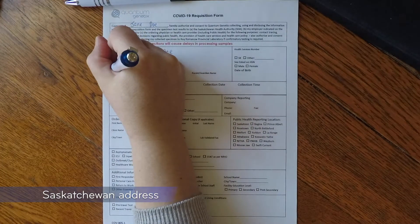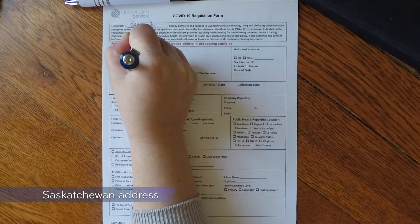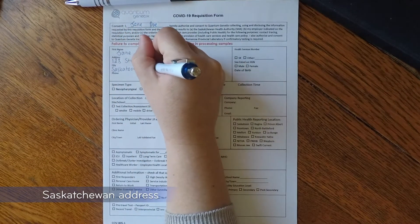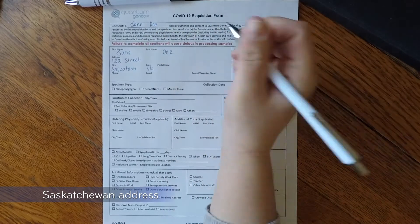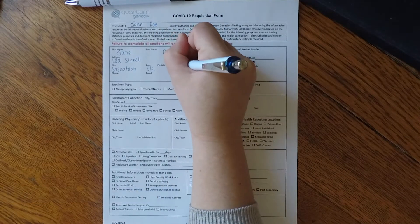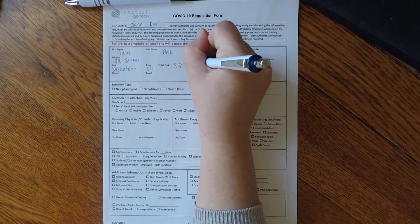Next, fill in your Saskatchewan address including street, location, city, province and postal code. This will also be reflected on your results.